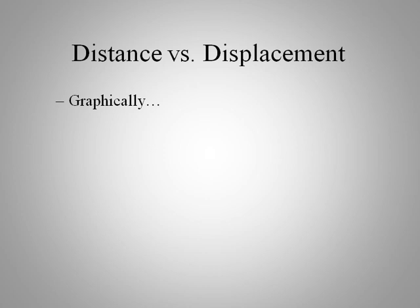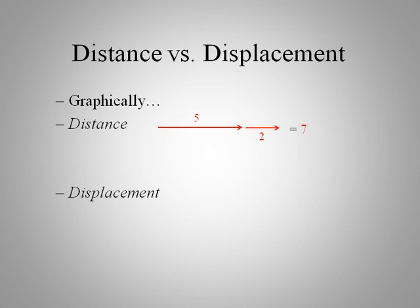Let's look at graphically what's the difference between distance and displacement. Distance, if we had our five and two, well you can't have a negative, so we're going to turn that into a positive and when we do that we add them together we get our seven units of length. And displacement however we can have a negative value and so we would get a three there.